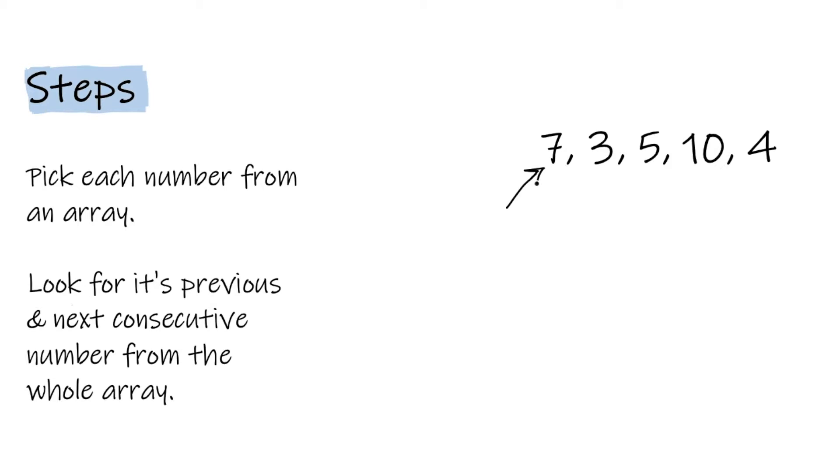For this array [7, 3, 5, 10, 4], we pick the first number, 7, and look for its next consecutive number, 8, in the whole array. If it's not there, we start looking for its previous consecutive number, 6, in the whole array, but unfortunately it's also not present.